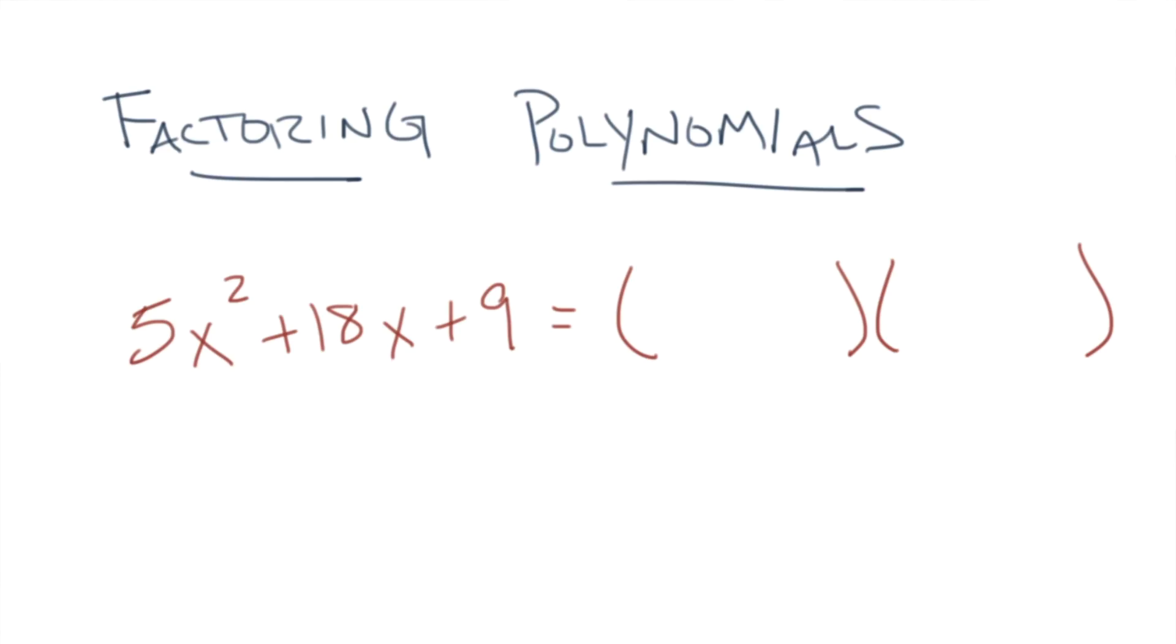Now factoring polynomials is one of the most difficult things for high school students. But I've got a trick to help you do it every time. Let's say we're trying to factor this polynomial. Now the answer we're looking for is going to look kind of like this: something x plus something else times something else x plus something else. Now that you're completely tense and totally confused, let's play a game.